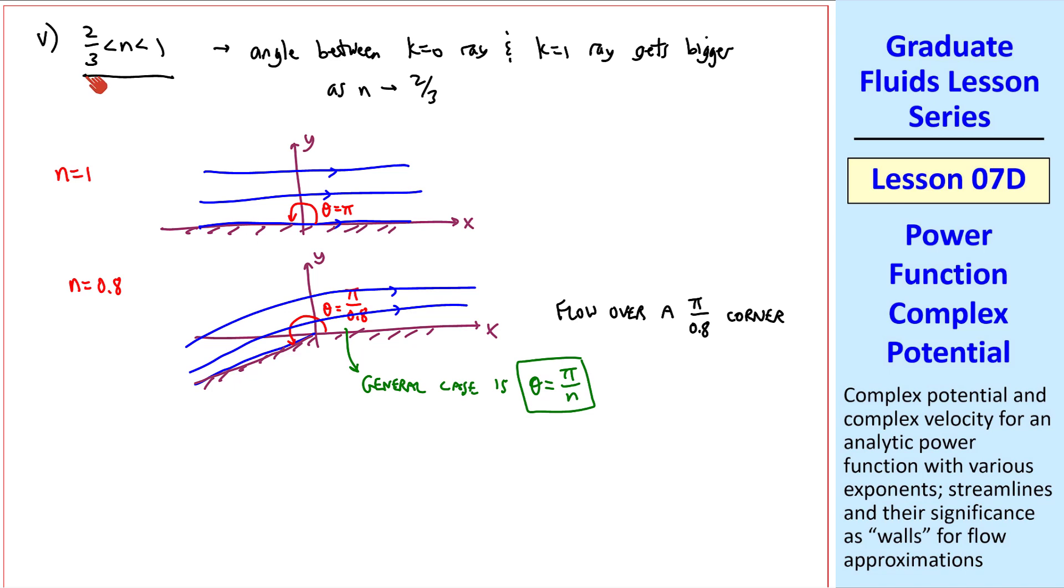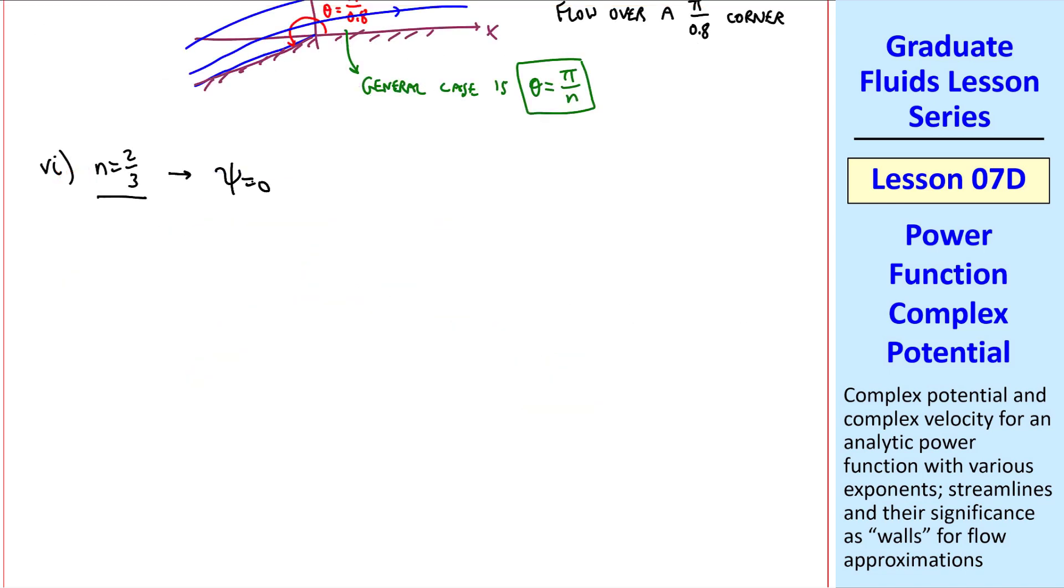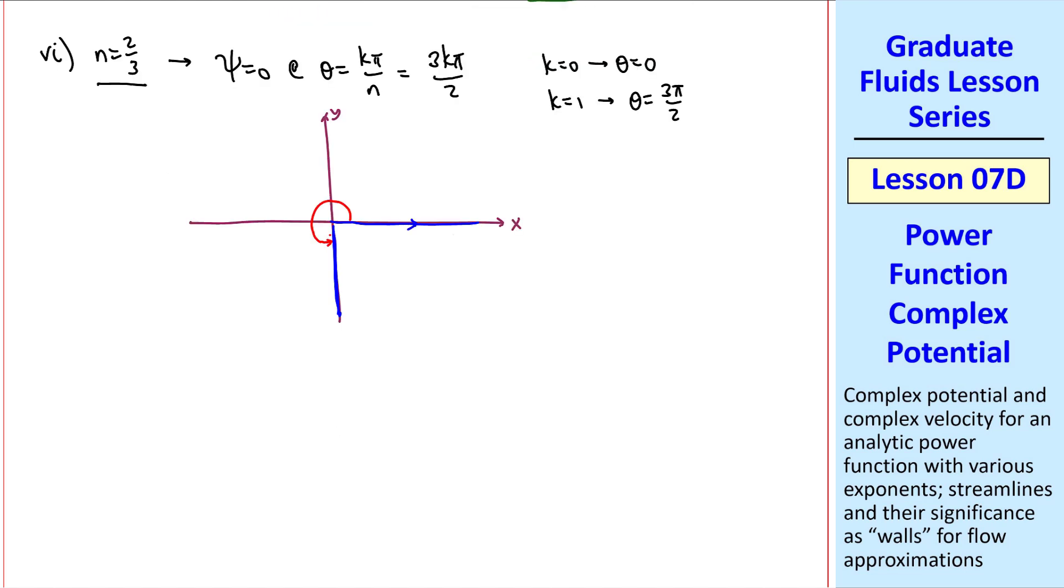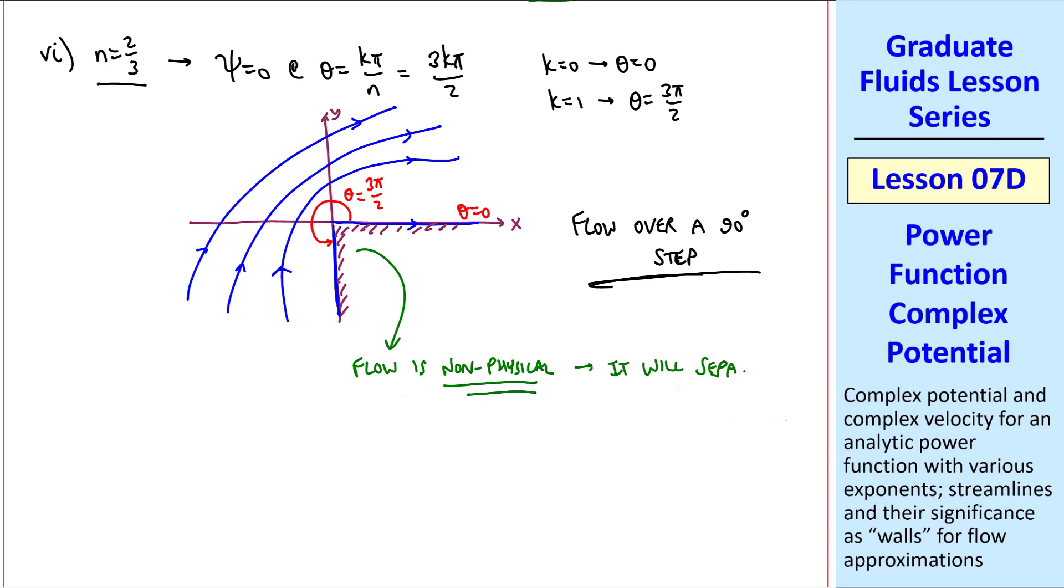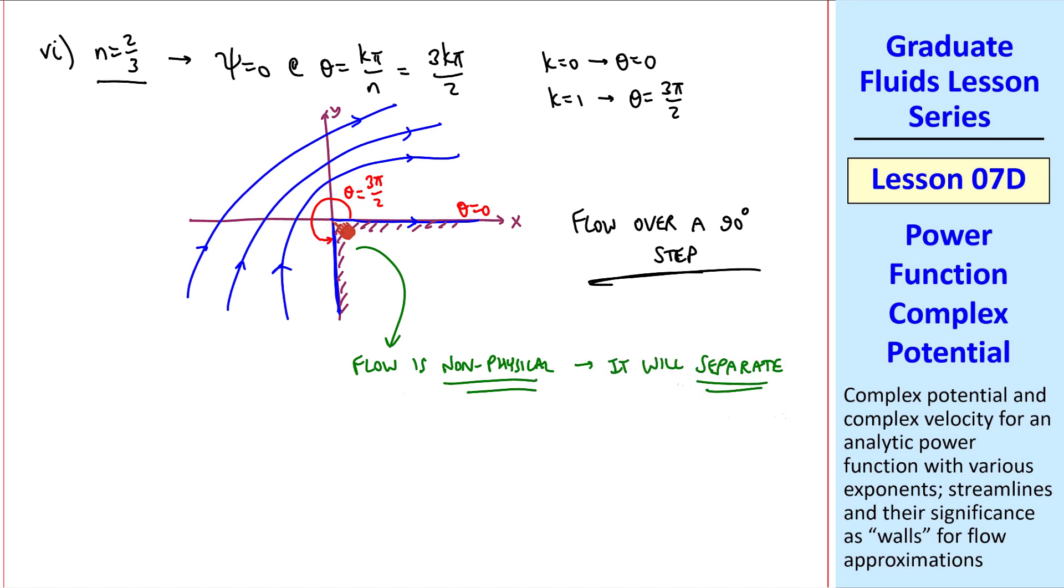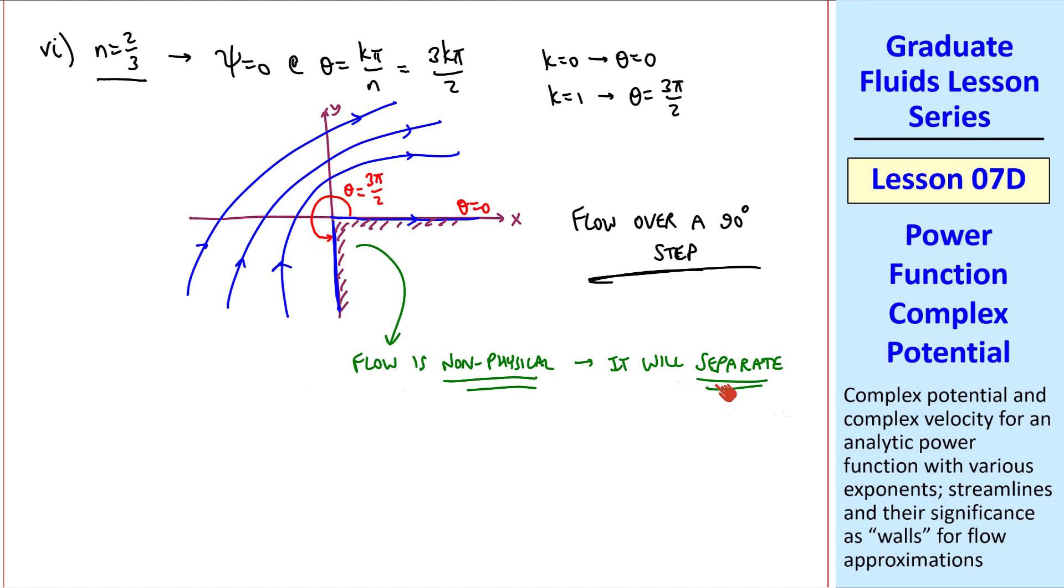The value of n equal 2/3 is a special case. In that case, psi equals 0 at theta equal k pi over n, which is 3k pi over 2 for n equal 2/3. k equals 0, theta equals 0 as always. When k equals 1, theta is 3 pi over 2, which means that we have this streamline and this streamline as our rays when theta equals 0 and 3 pi over 2. The streamlines would look something like this, where the flow comes up and turns to the right. Flow over a 90 degree step. Although this looks kind of cool, perhaps, this flow is non-physical. A real flow will separate at this sharp corner. The flow can't go through a sudden change of angle like this without separating.